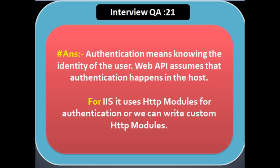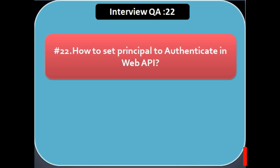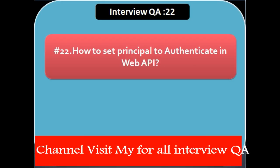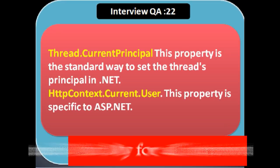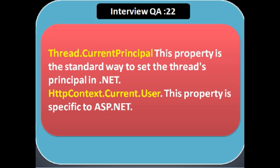For IIS, it uses HTTP modules for authentication, or we can write a custom HTTP module. Next question: how to set the principal to authenticate in Web API. When the application performs any custom authentication logic, you must set the principal on two places: Thread.CurrentPrincipal — this is the standard way to set the thread's principal in .NET — and second, HttpContext.Current.User.